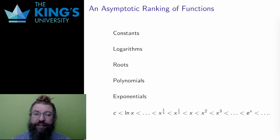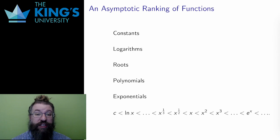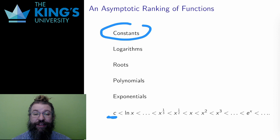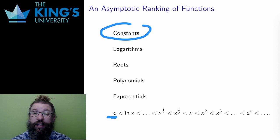To apply this idea of asymptotic order to functions, I need a ranking of functions by their asymptotic order — an asymptotic ranking. The start of the ranking is a constant, a function which doesn't grow. Anything that grows has a higher ranking than a constant. Any bounded function also has the same ranking as a constant; sine and cosine, for example, have the same asymptotic order as a constant because they are bounded.